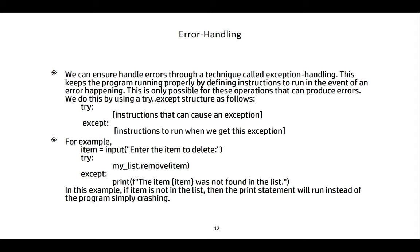That was a fast overview of how to use lists in Python. Lists are fairly easy to use, but as previously mentioned, there are exception-causing instructions such as the remove instruction and index access. So how do we keep our program from crashing when using such instructions, especially when we allow users some control over what gets added or removed from the list?